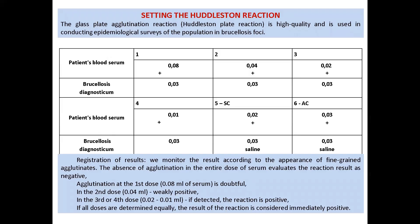The agglutination reaction on glass — the Hedelson reaction — is of high quality and is used in epidemiological surveys of the population in Brucellosis foci. Different doses of the test serum are applied to the glass, then an antigen is added and the mixture is thoroughly mixed. With a positive reaction, from the very first minutes there is enlightenment of the liquid and formation of agglutinate flakes. The reaction is considered negative if there is no agglutination in all serum doses.